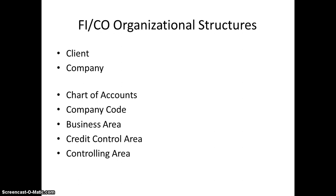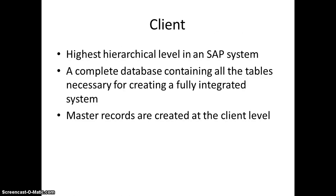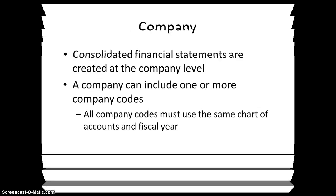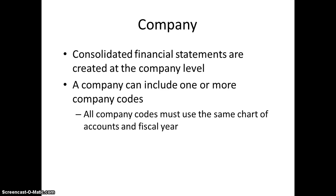Now in this we have client, company, chart of accounts, company code, business area, credit control area, and controlling area. The client is the highest level of hierarchy — for example, BMW is our client. A company is like BMW International, which is a registered or global company — it's a group. A group is called a company, and consolidated financial statements are created at the company level.